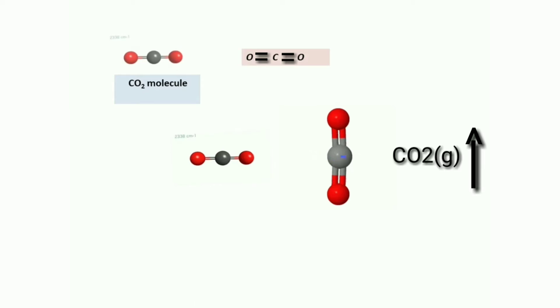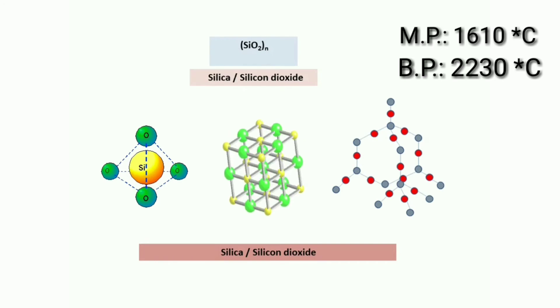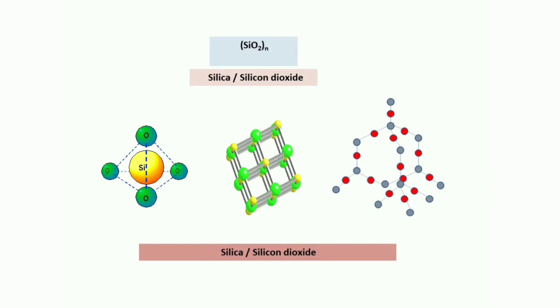On the other hand, silicon dioxide is a polymer molecule or a giant molecule. Here is the structure of silicon dioxide. Melting and boiling point of silicon dioxide are 1610 degrees centigrade and 2230 degrees respectively. And in reality, silicon dioxide is solid.